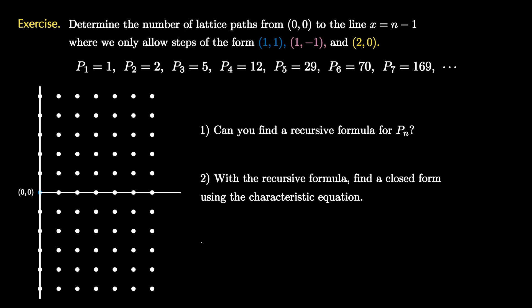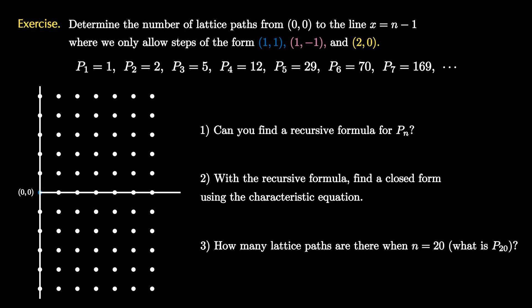Once you have that closed form, can you use it to find out how many lattice paths there are when n equals 20 — that is, how many lattice paths there are from (0,0) to the line x equals 19?